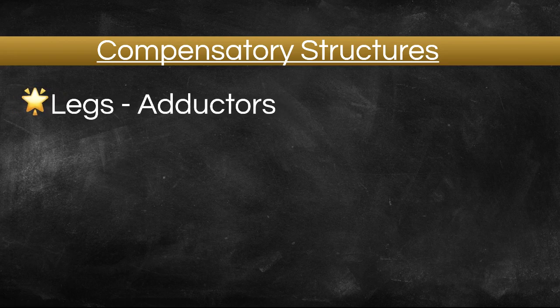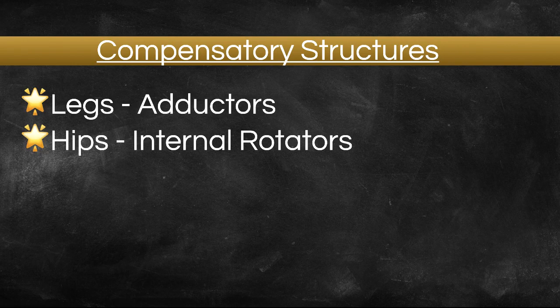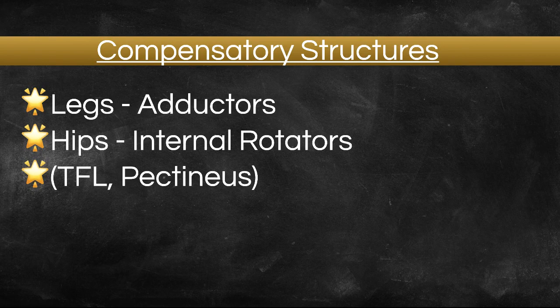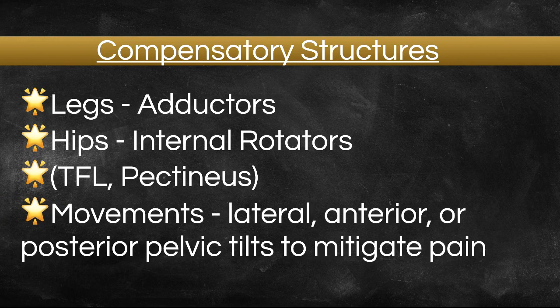Looking at the squat first: the adductors are compensating to provide stability in her squat for the weakness in her upper hips. Looking at the hips, the internal rotators — the TFL and pectineus — are probably stronger than the glute min and glute medius because they are inwardly rotating the hips. When there is instability in the upper hips, the inward rotators tend to be a little bit stronger. You might also evaluate whether your client compensates for the pain she experiences while running with either an anterior or lateral pelvic tilt to dissipate some of the pain from one hip to the other while she's running. This is where a functional assessment will come in handy.